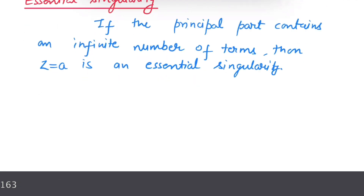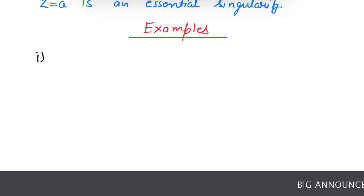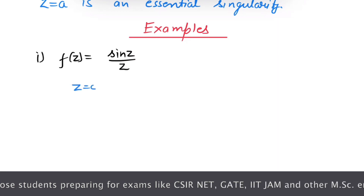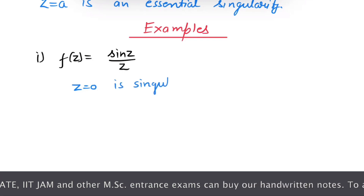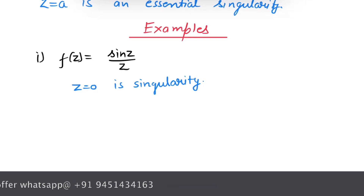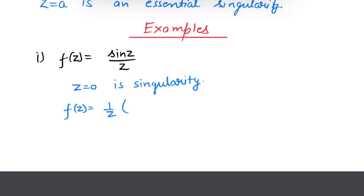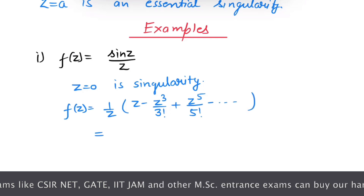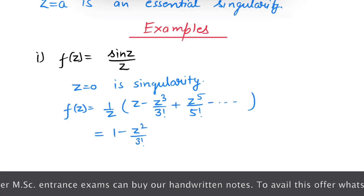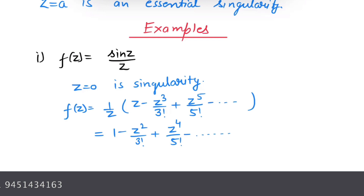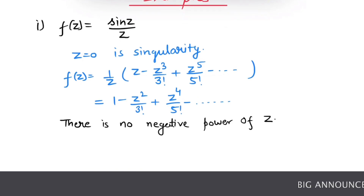Let us see some examples to understand these definitions. First example: f of z equals to sin(z) over z, where z equals to 0 is its singularity. Writing the expansion: f of z equals 1 over z times the expansion of sin(z), which is z minus z cubed over factorial 3 plus z to the power 5 over factorial 5 and so on. On simplifying, we have 1 minus z squared over factorial 3 plus z to the power 4 over factorial 5 minus and so on. You can see there is no negative power of z. Hence, z equals to 0 is a removable singularity.